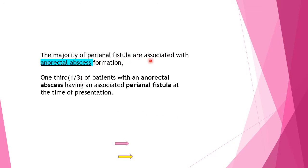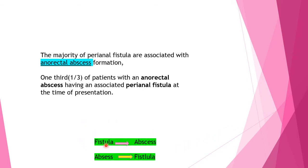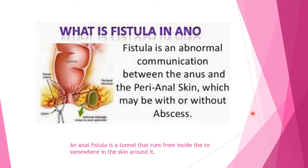The majority of perianal fistulas are associated with anorectal abscess formation. In fact, one-third of patients with anorectal abscess have an associated perianal fistula at the time of presentation. There is a relationship between anal fistula and perianal abscess — the fistula can give rise to an abscess, and at the same time, an abscess is also the cause of a fistula. A fistula in ano is an abnormal communication between the anus and the perianal skin, which may or may not be associated with an abscess.